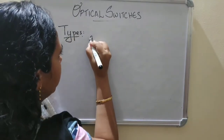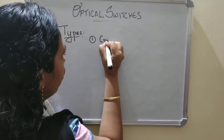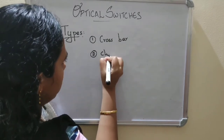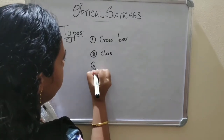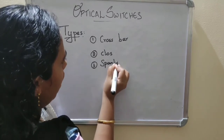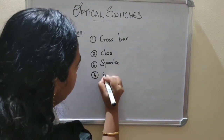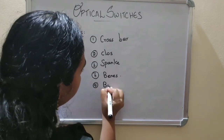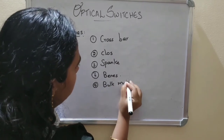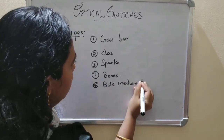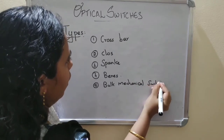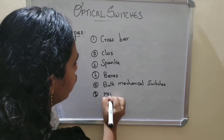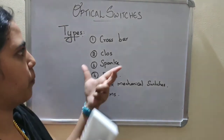There are normally 6 types of optical switches. The 1st one is Crossbar, 2nd one is Closs, 3rd one is Tank, 4th one is Benes, 5th one is Bulk Mechanical Switches, and finally MEMS — that is Micro Electro Mechanical Switches.